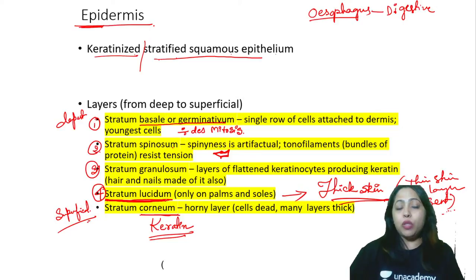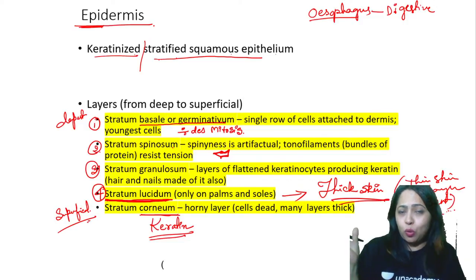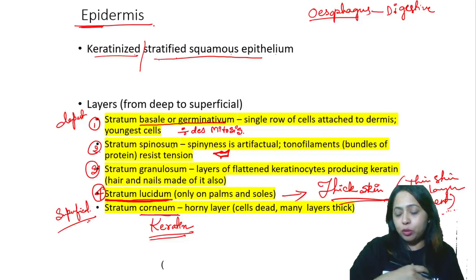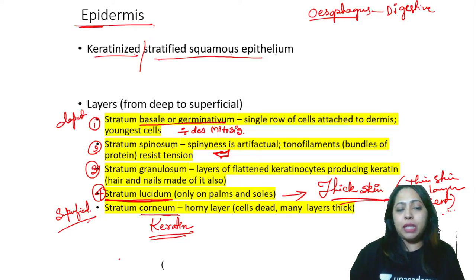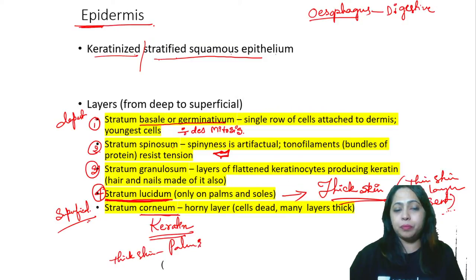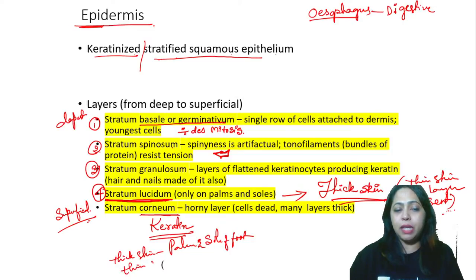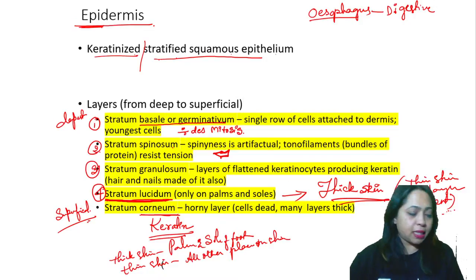Lucidum gives thickness to the skin — you can see it in your own palm or the sole of your foot, how thick it is compared to other parts of the body. It also has no hair in these regions. The examples for thick skin are palm and soles of the foot. For thin skin, it is all over the rest of the body, except those two areas.